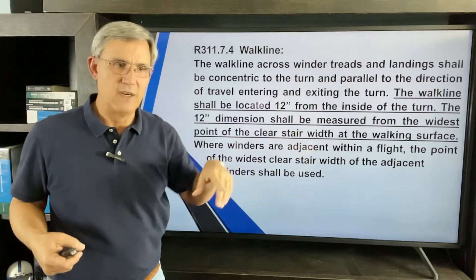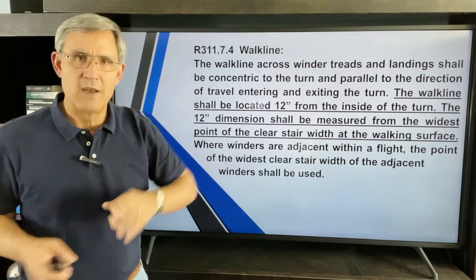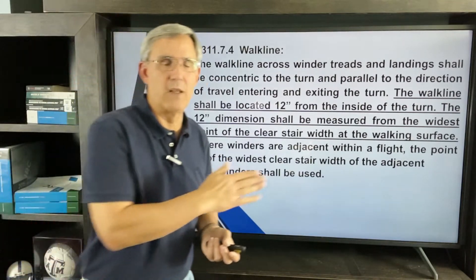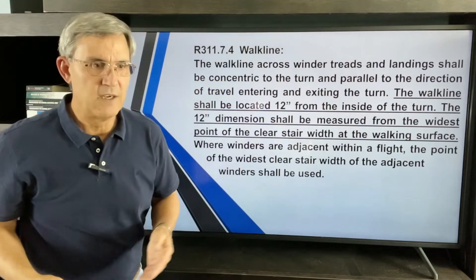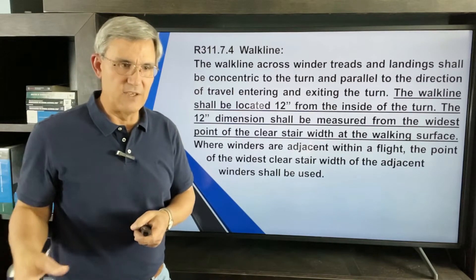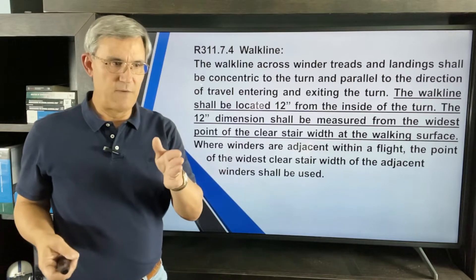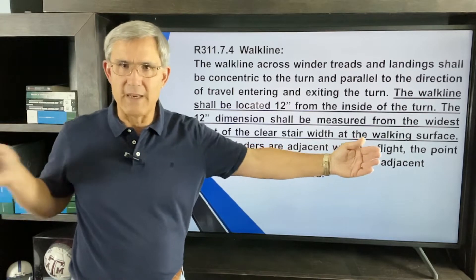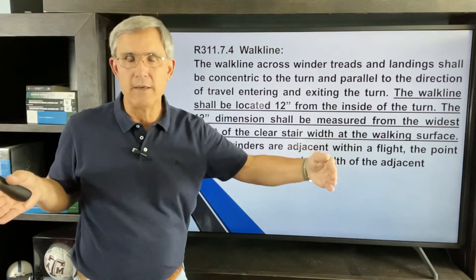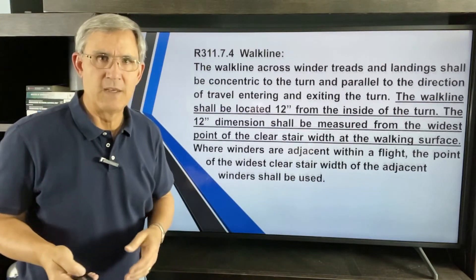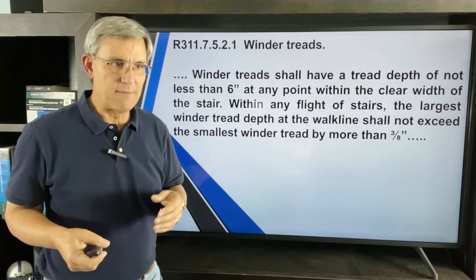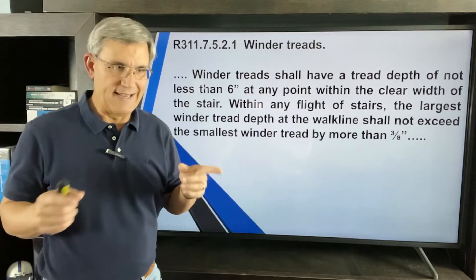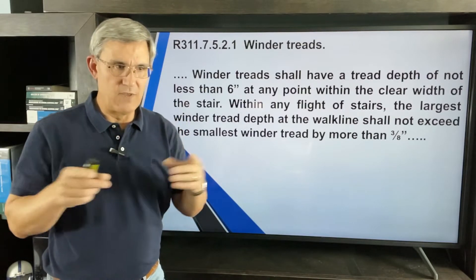The walk line shall be located 12 inches from the inside of the turn. Usually you're going to grab the handrail on the inside of the curve — not many people take the long part of the curve up the stair. The 12-inch dimension shall be measured from the widest point of the clear stair. So they're talking about the clear walking surface. Winder tread shall also have a tread depth of not less than 6 inches at any point within the clear width of the stair.